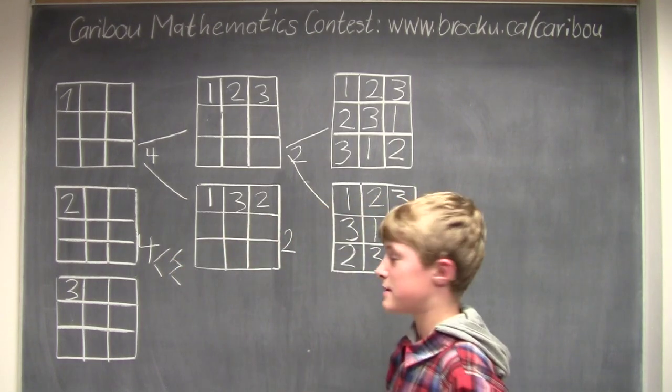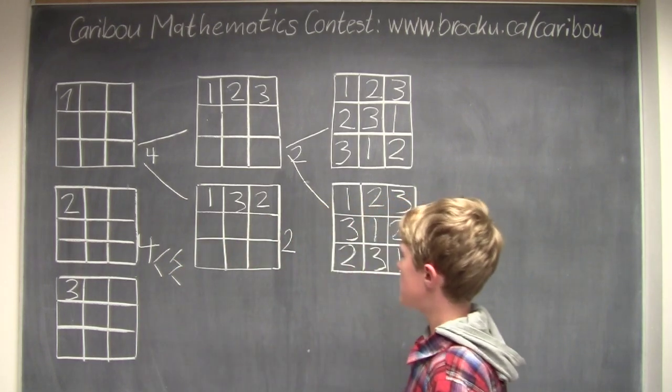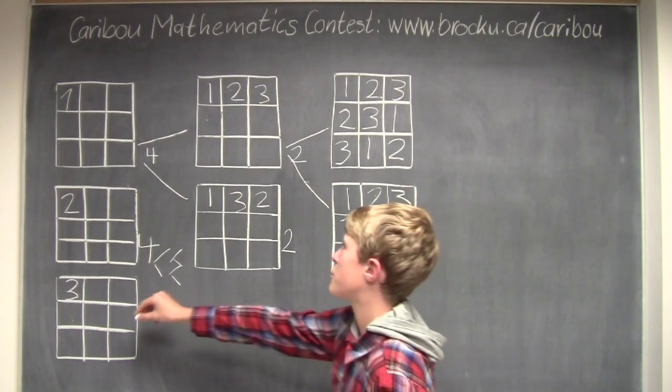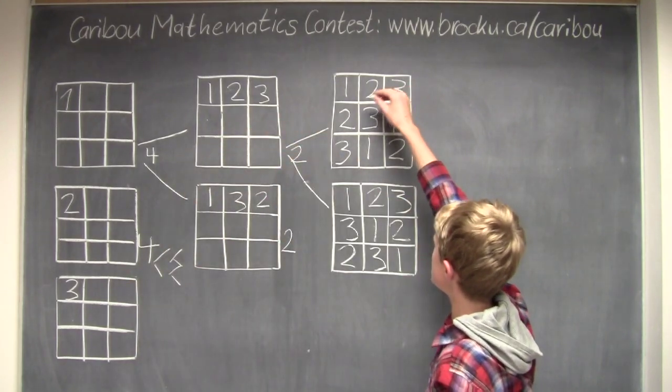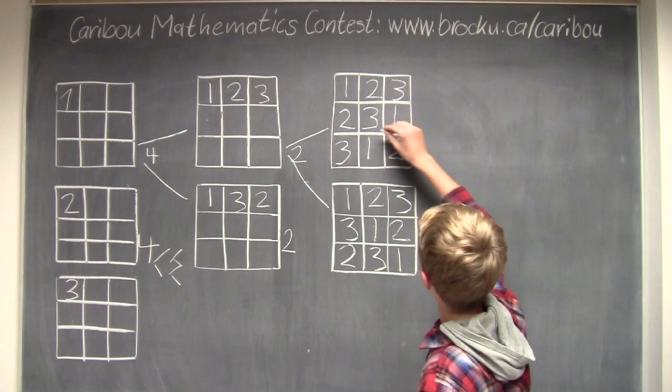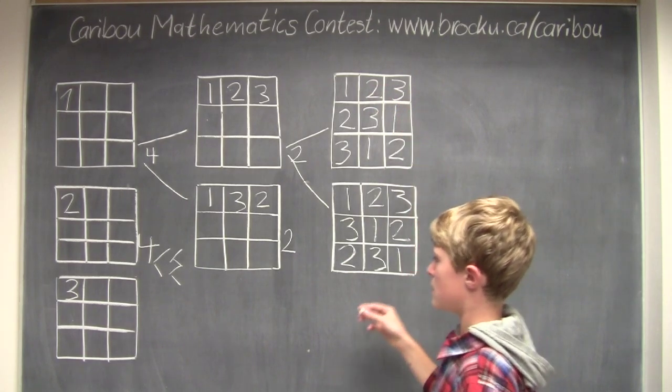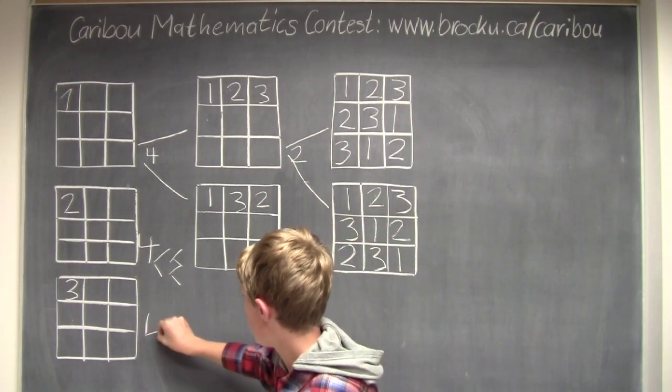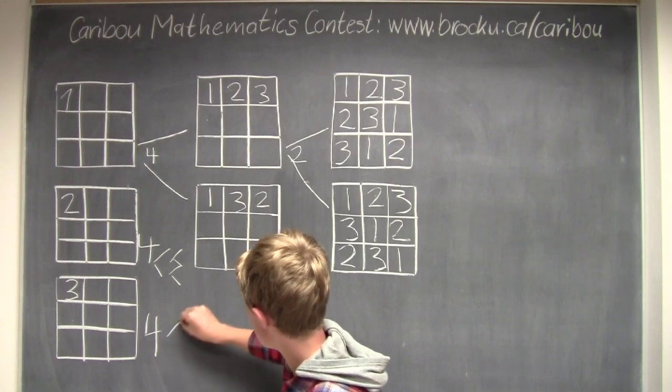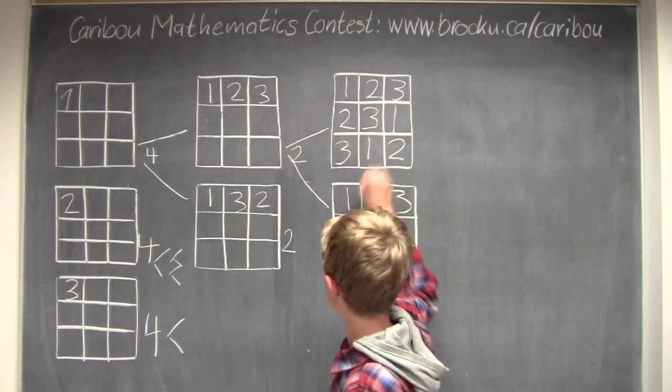And it would be the same thing for 3, because we can always just swap in the 3 and the 1 for the solutions, so like here. So that would also be 4, because like there, there, 2, and there.